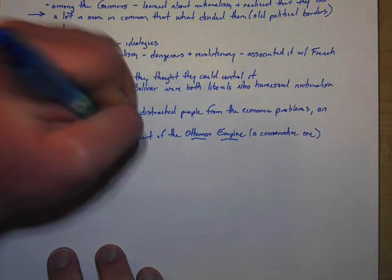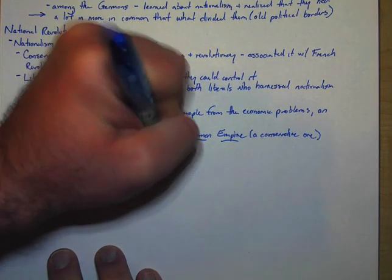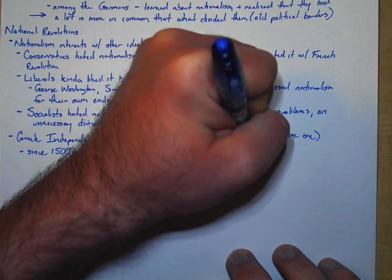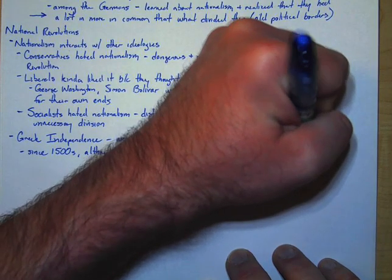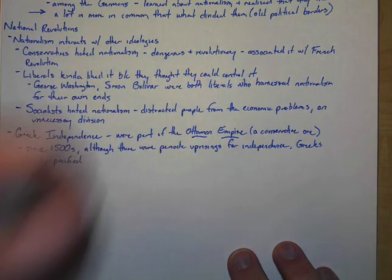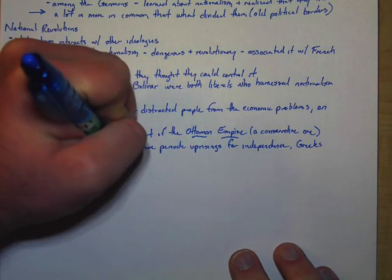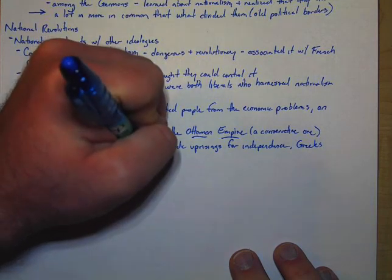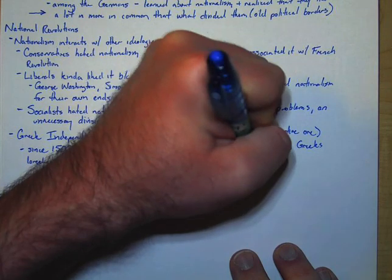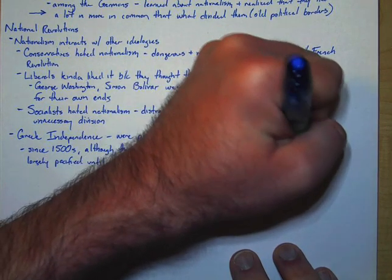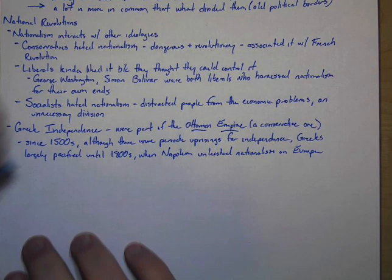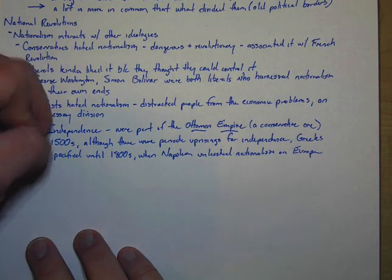Now the Greeks had been in the Ottoman Empire since like the 1500s. And although there were periodic uprisings for independence, the Greeks were largely pacified until the 1800s when Napoleon unleashed nationalism. And like almost immediately, the Greeks rise up again. So this happens in 1821.